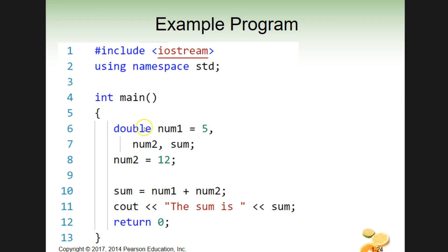This entire line here - we've got double num1 equals five comma. This is one continuous statement. That's why there's only a semicolon here. And there's a comma here. This continues down to this line and keeps going.